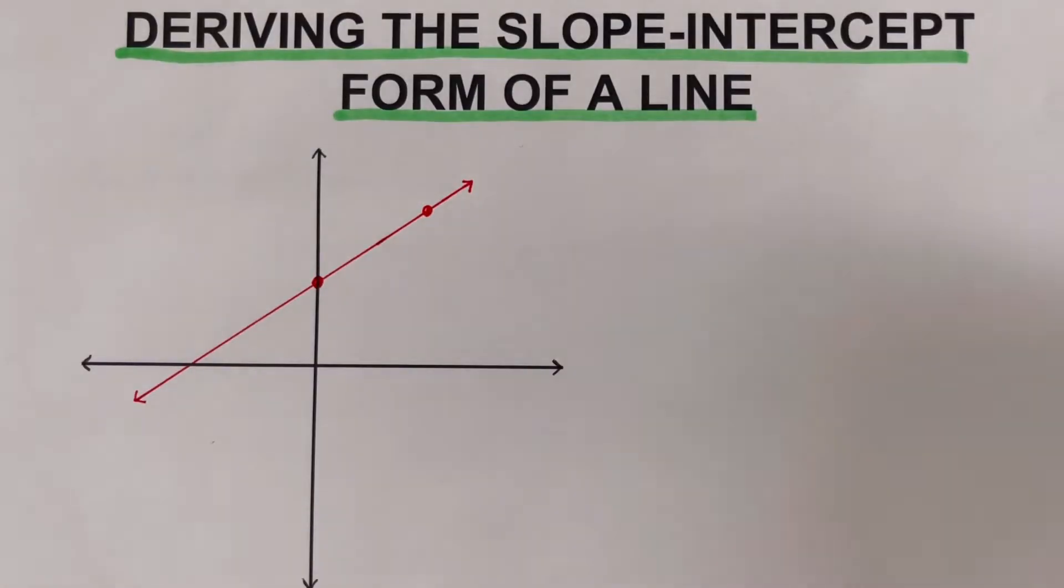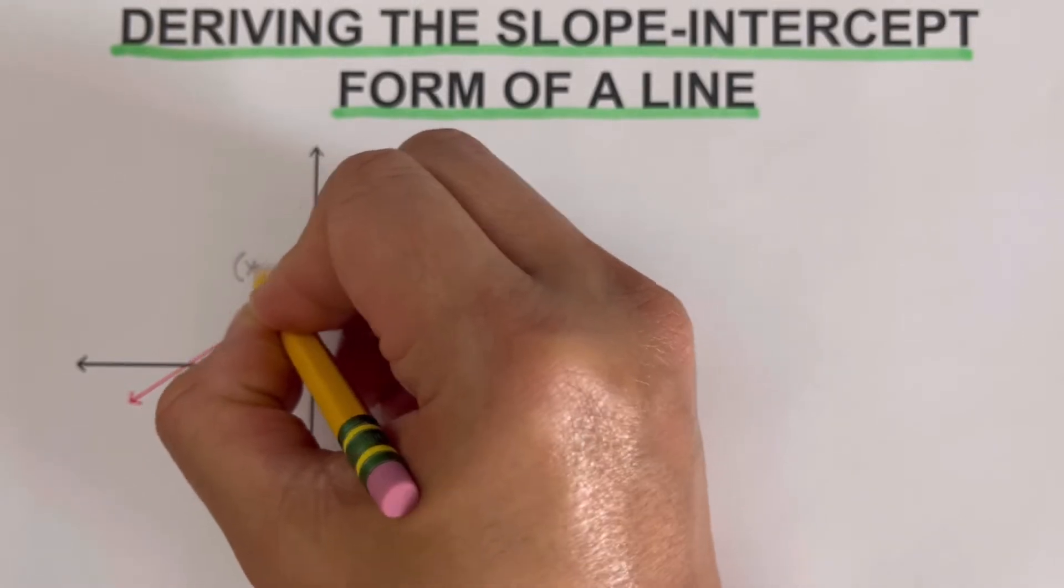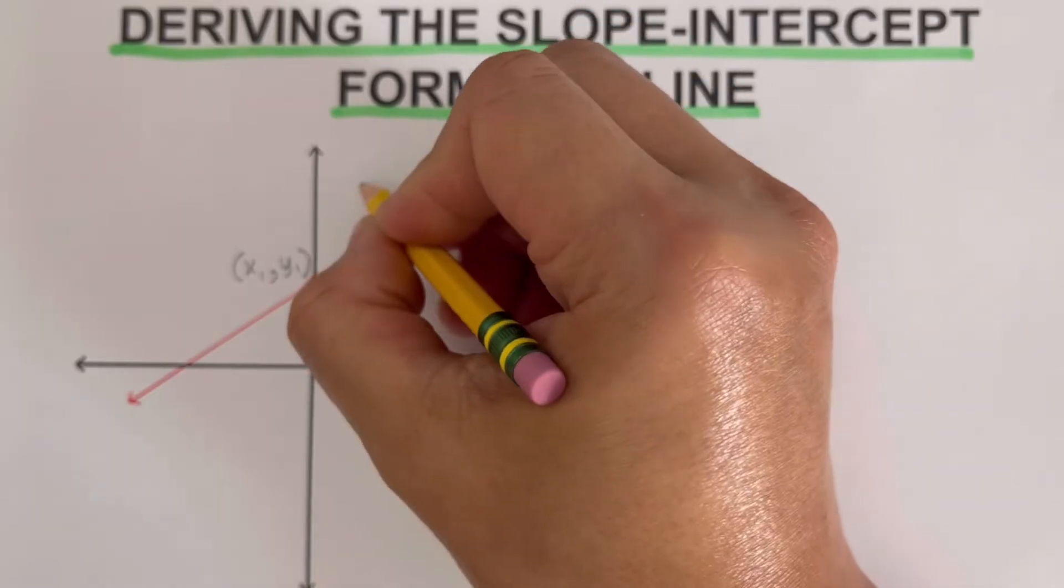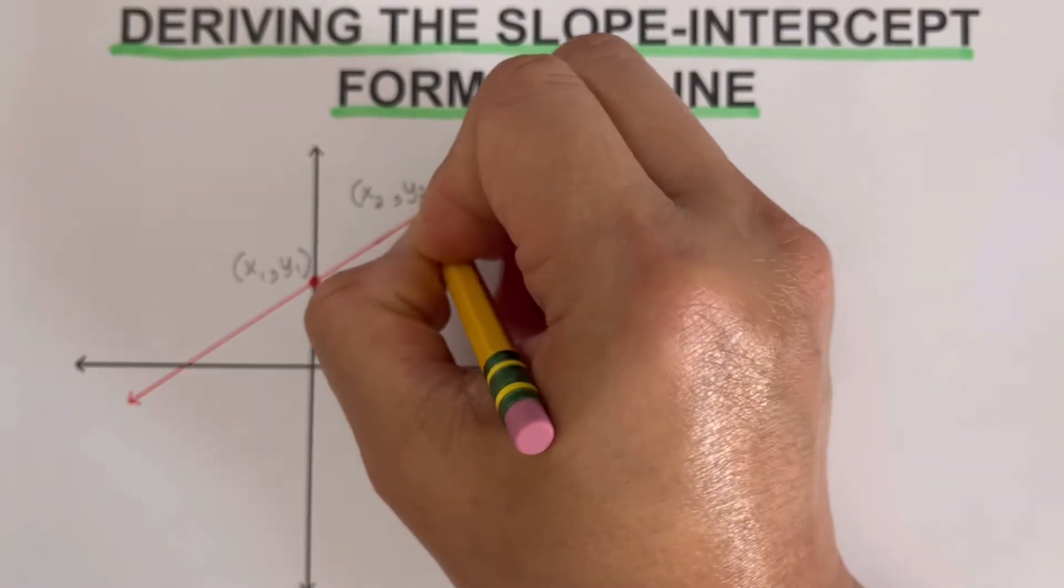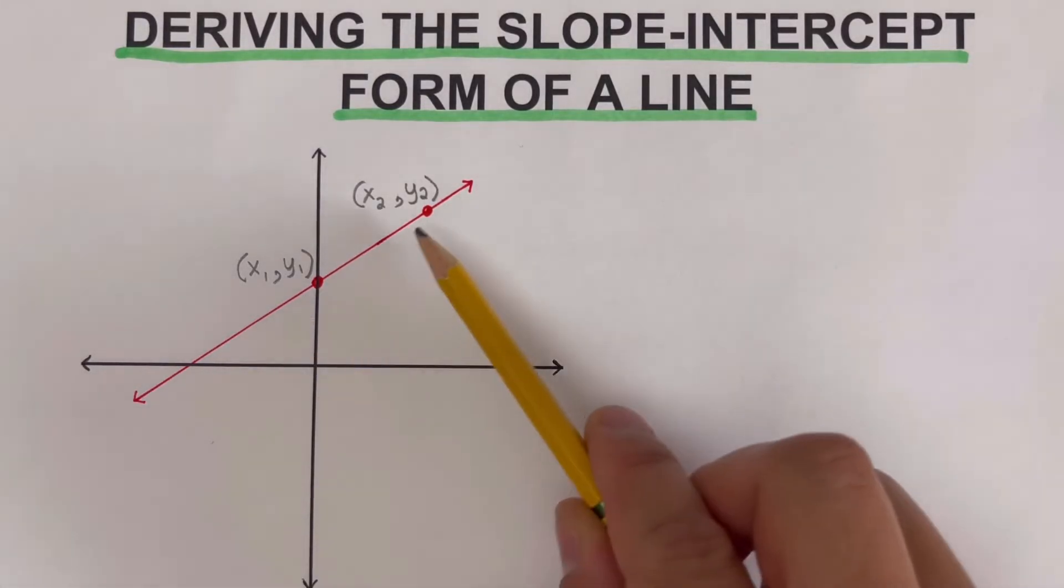The coordinate of the first point that we have here can be labeled as x sub 1, y sub 1. Well, the other one right here would be x sub 2, y sub 2. So this is a more general way of putting label to the points.